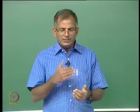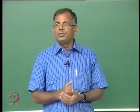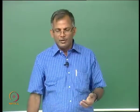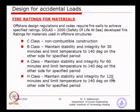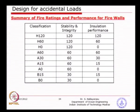H class has stability and strength for 2 hours, A class for 1 hour, and B class for half an hour. The subscript number — for example H120 versus H60 — indicates the insulation performance in minutes. H120 means 2 hours of stability, strength, and insulation; H60 means 2 hours of stability and strength but only 1 hour of insulation performance. This is how the firewall characteristics are defined.